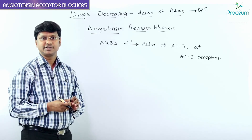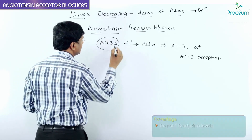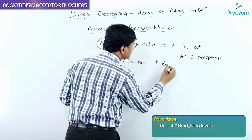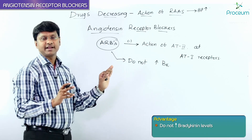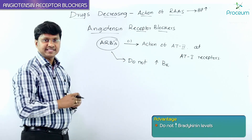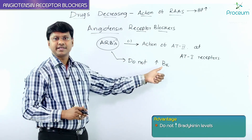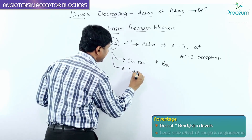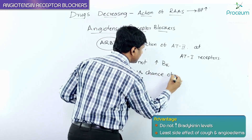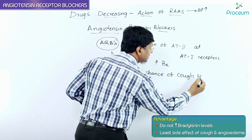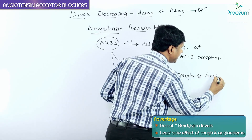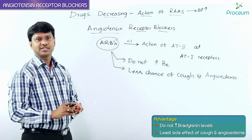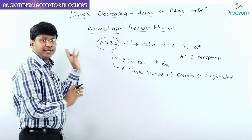An important advantage of ARBs is that they do not increase bradykinin levels, which is what ACE inhibitors do. Because they do not increase bradykinin levels, ARBs have less chance of causing cough and angioedema.